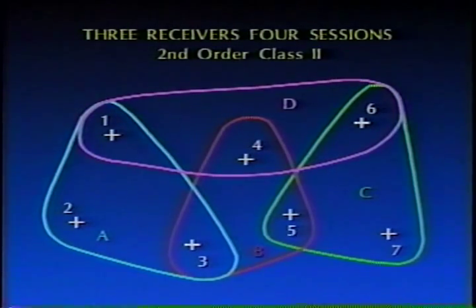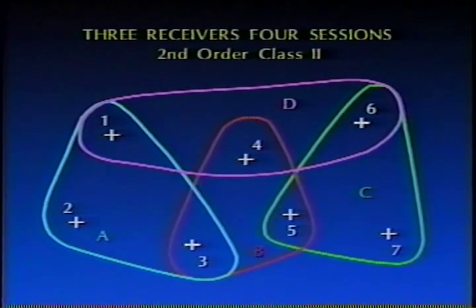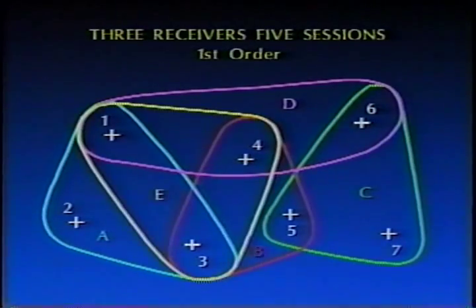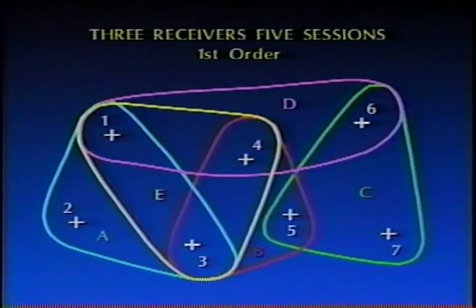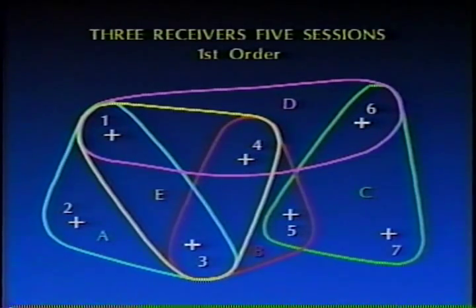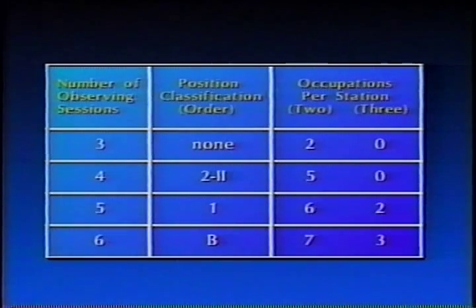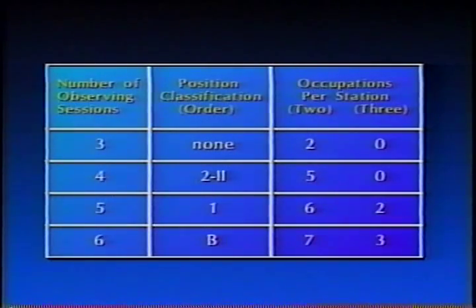Reviewing the scenarios: in scenario two, increasing sessions by one provides second-order class two accuracy, still short of first order. By adding one more session in scenario three, the first-order requirement is met. Adding yet another session could further upgrade the network to an even higher order of accuracy. Planning is the key to ensuring FGCC guidelines are met. For first-order accuracy — 10 millimeters plus one part per 100,000 — 10% of total stations must be occupied three times, 25% of existing control stations and 30% of all new stations must be occupied twice.